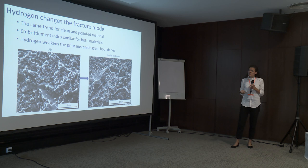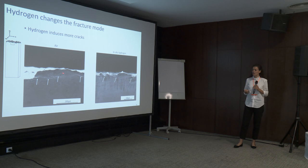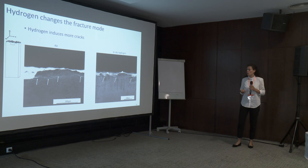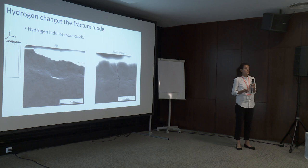The embrittlement index for both materials was similar. On the tension side of the mid-plane of the sample, without hydrogen many cracks are present parallel to the fracture surface. Once hydrogen is introduced, in addition to those cracks, there is also significant cracking perpendicular to the fracture surface. This is consistent with hydrogen weakening the grain boundaries, which then become the weakest link where cracks propagate.